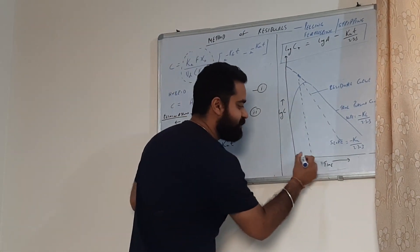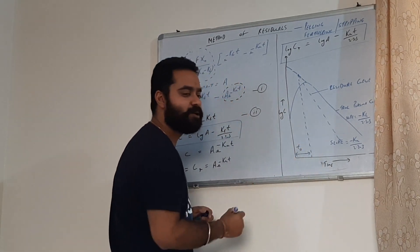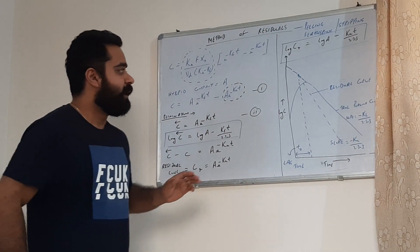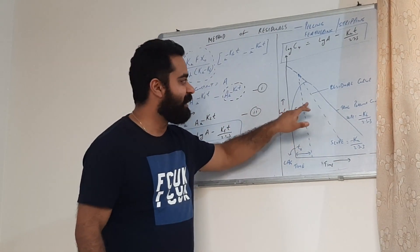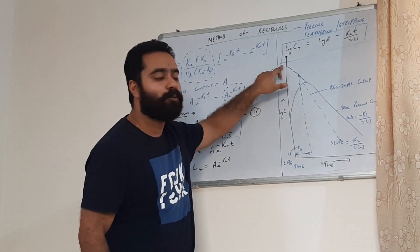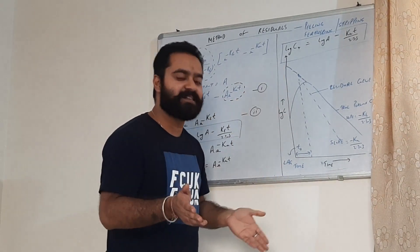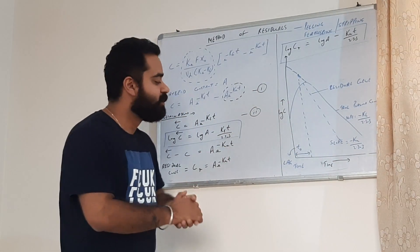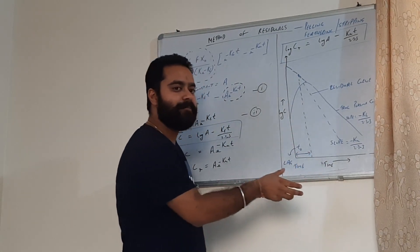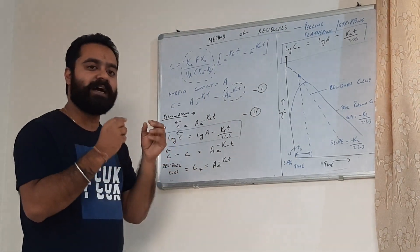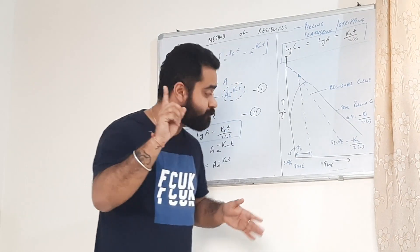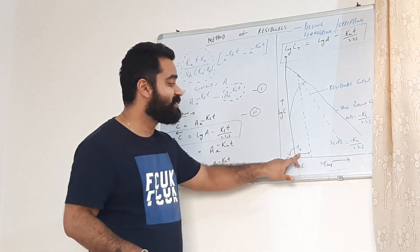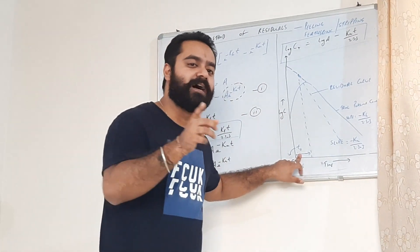This time duration is called T0 or T-zero, which represents lag time. Ideally, the true plasma concentration and the residual curve should intersect each other at time T equals zero. But in most cases this does not happen — the intersection occurs at a time when T is greater than zero. This time duration is the lag time: the difference between the time of administration and the start of absorption. Do not confuse this T0 with onset of action.